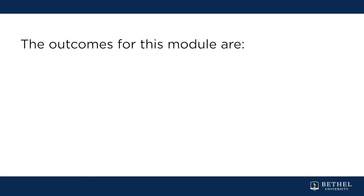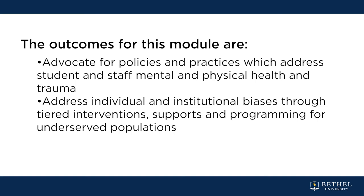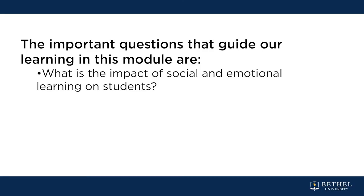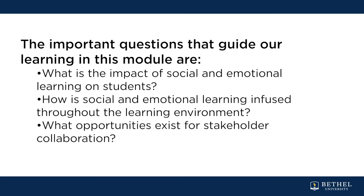The outcomes for this module are to advocate for policies and practices which address student and staff mental and physical health and trauma, and to address individual and institutional biases through tiered interventions, support, and programming for underserved populations. The guiding questions are: What is the impact of social and emotional learning on students? How is SEL infused throughout the learning environment? And what opportunities exist for stakeholder collaborations?